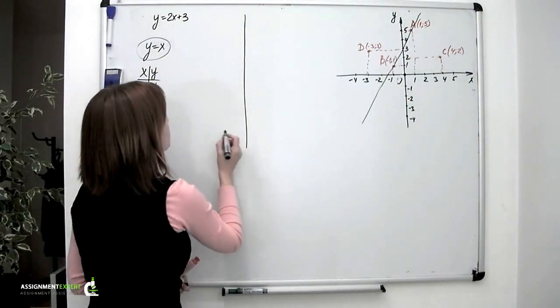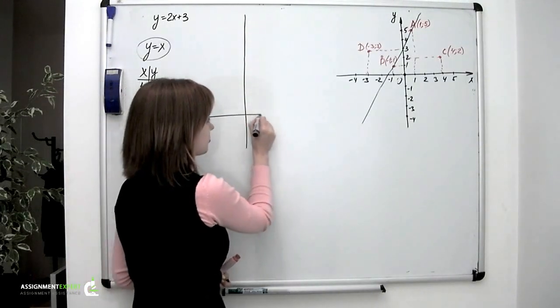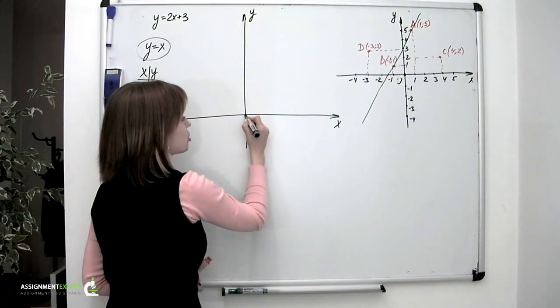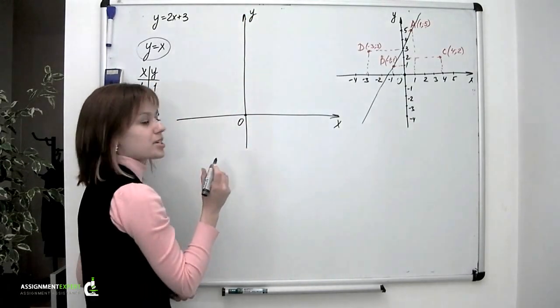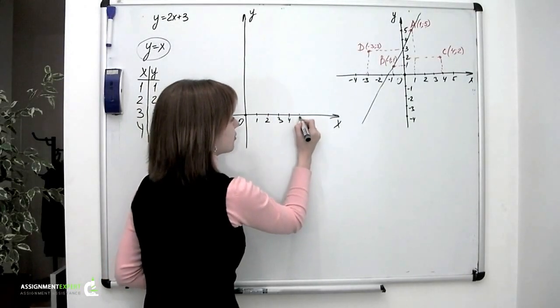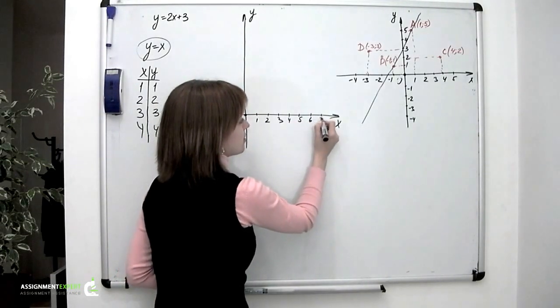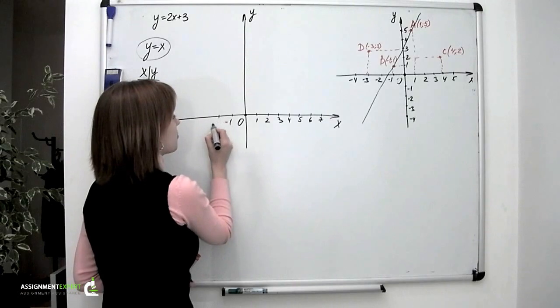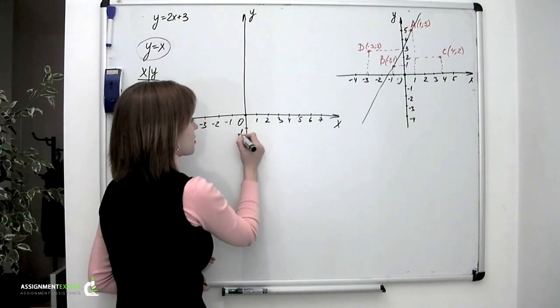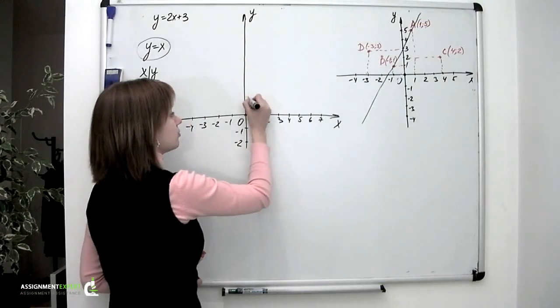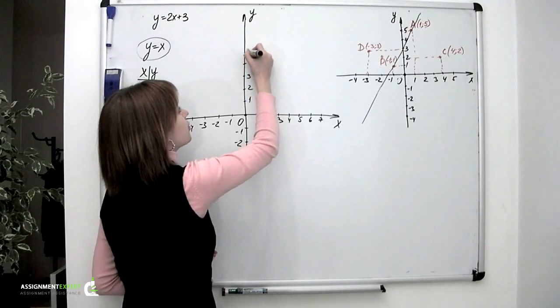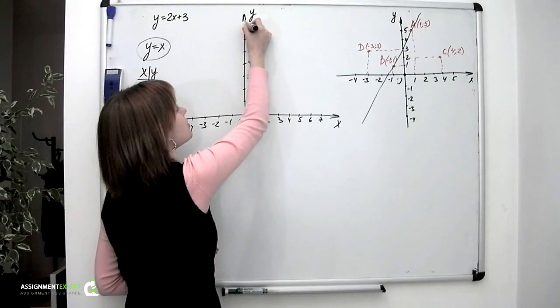We're drawing a coordinate plane. X-axis, y-axis, the origin. Now we're assessing a scale: 1, 2, 3, 4, 5, 6, 7. Minus 1, minus 2, minus 3, minus 4. Minus 1, minus 2. 1, 2, 3, 4, 5, 6, 7.